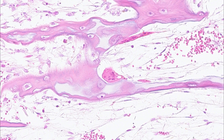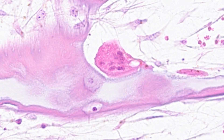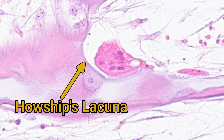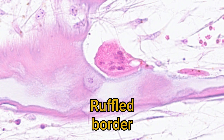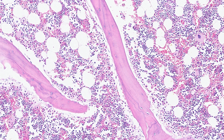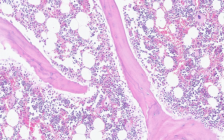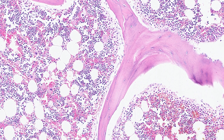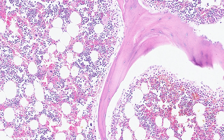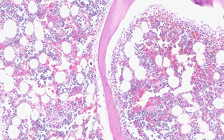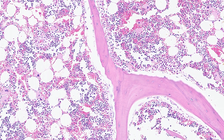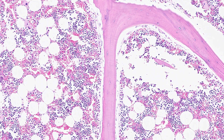Active osteoclasts are often found in depressions in the bone known as Howship's lacunae. The cell membrane of the osteoclast next to the bone matrix often has lots of microvilli to increase the surface area for acid and enzyme secretion — this feature is called the ruffled border. Once the secondary spongiosa is formed, it is continually subject to remodelling depending on mechanical and hormonal factors. Bone might be deposited in areas of increased mechanical stress, or resorbed if the body needs more calcium or phosphorus.